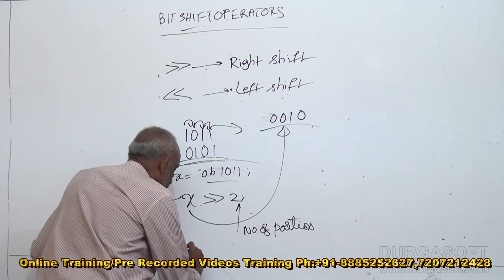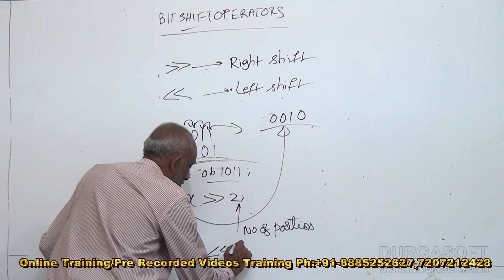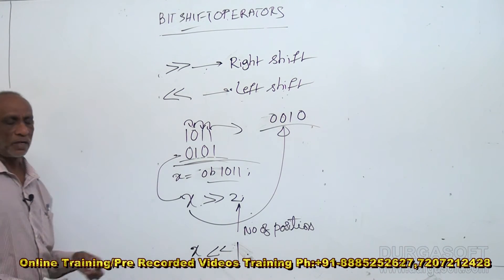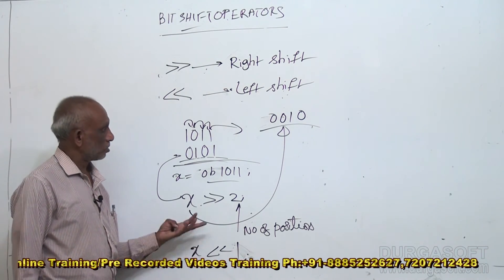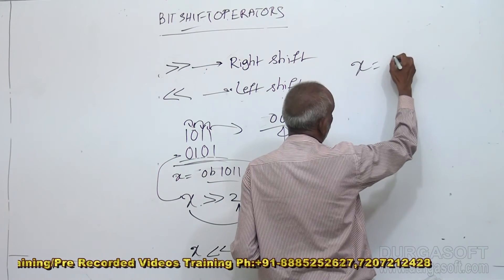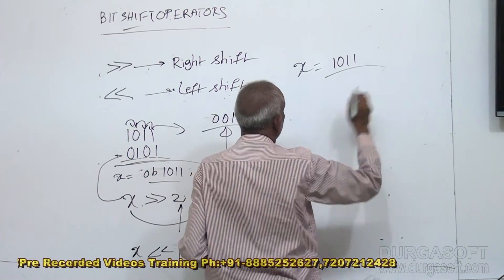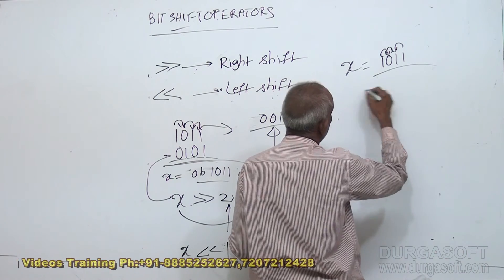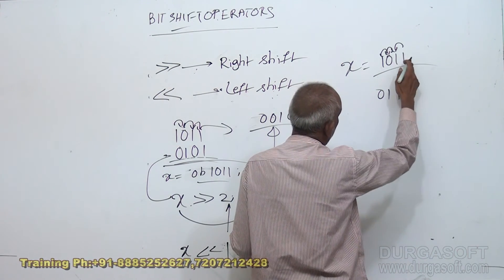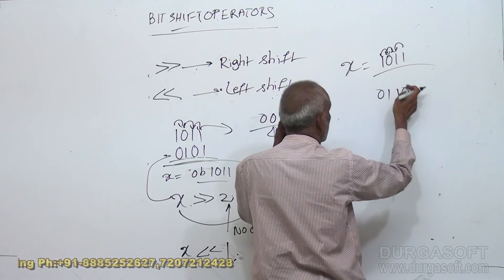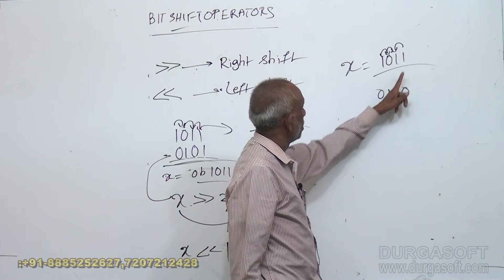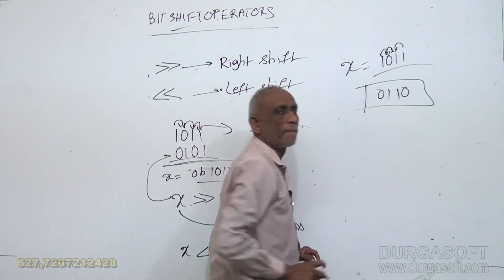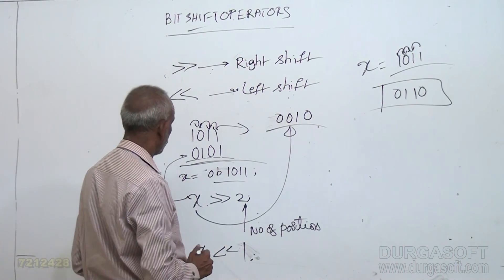Similarly, we can have a left shift. For x = 1011, writing x << 1 shifts all bits one position to the left. The leftmost bit falls out and 0 fills the rightmost position, giving 0110. This is the left shift operation. These are called bit shift operators.